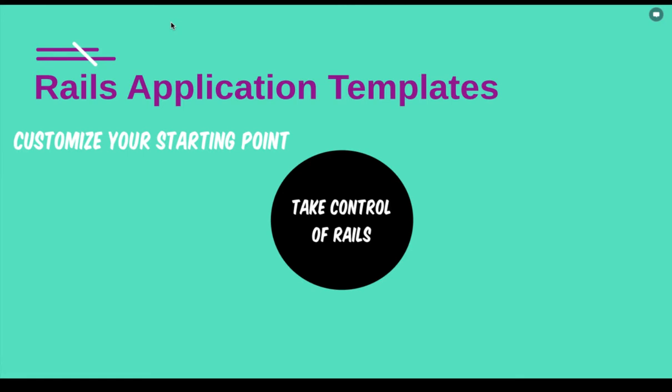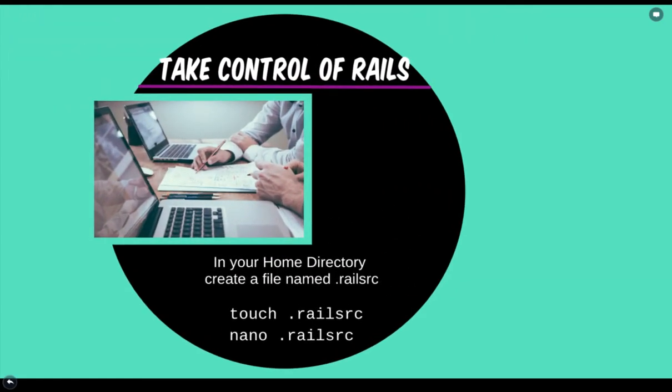Or do you want to use something more robust like Postgres or Oracle? Rails has settings and options for a number of different database connectors: Oracle, MySQL, Postgres, IBM database — there's a bunch of different settings. So you can customize what your new Rails project is going to look like by setting up this template and telling Rails to use it. So how do we get started?